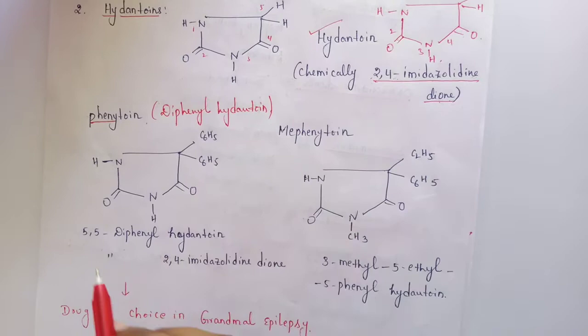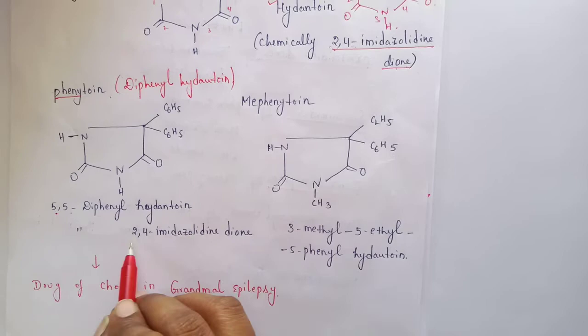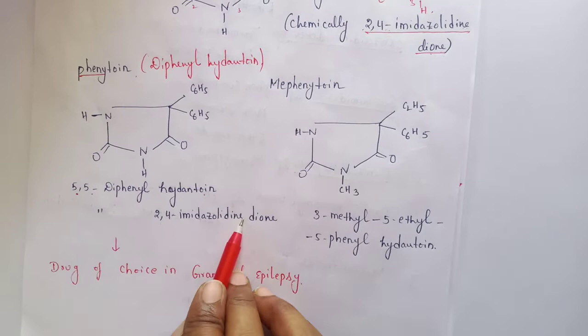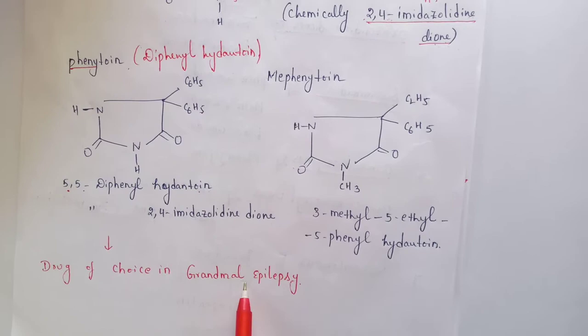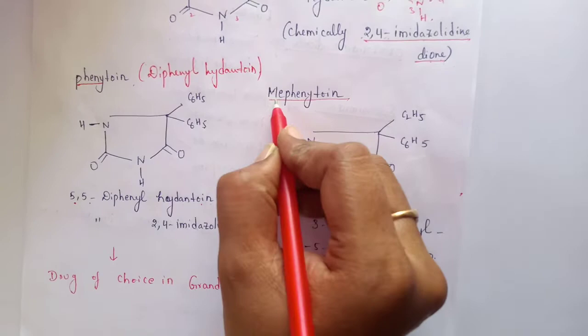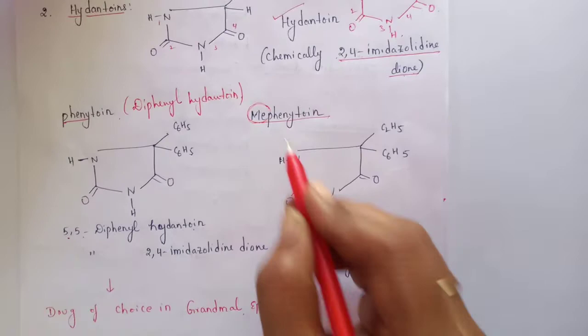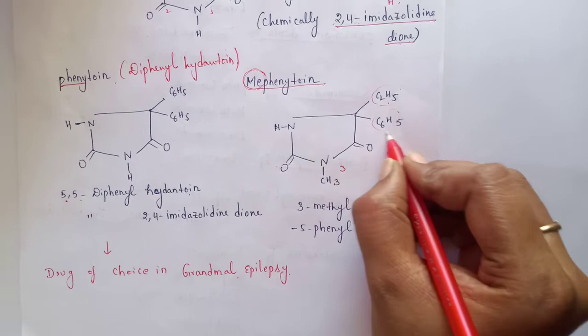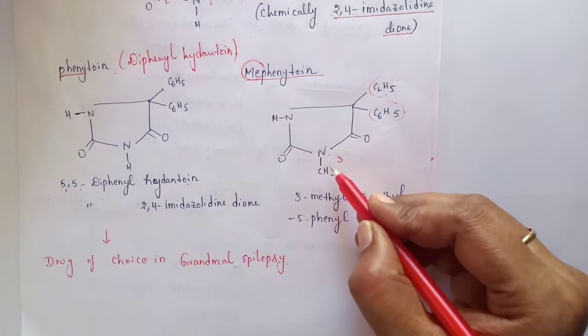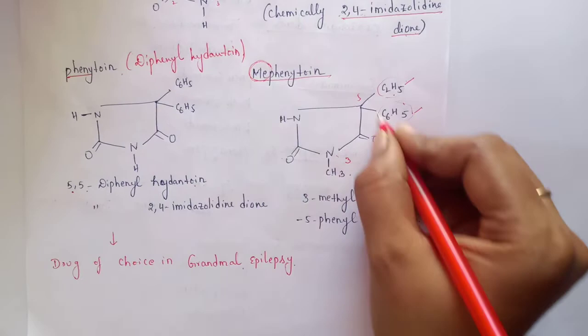While writing the chemical name, instead of 'hydantoin' we write 2,4-imidazolidindione, giving the name 5,5-diphenyl-2,4-imidazolidindione. The most important point is that phenytoin is the drug of choice in the treatment of grand mal epilepsy. Coming to mephenytoin — the difference is that at the 5th position it possesses ethyl and phenyl, and at the 3rd nitrogen position it possesses a methyl. The chemical name is 3-methyl-5-ethyl-5-phenylhydantoin.